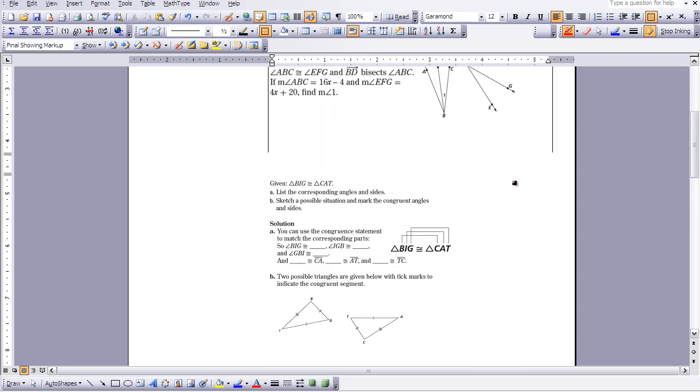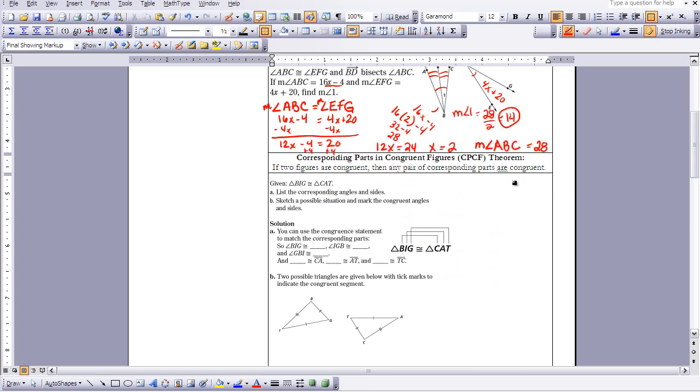The next theorem that is extremely important, I want you to star it, highlight it, circle it, do whatever you need to do to make this theorem stand out. This theorem will be used in chapter 5 and in chapters 6 and 7 when working with trying to prove figures are congruent. It's called corresponding parts in congruent figures, and it will be abbreviated CPCF.